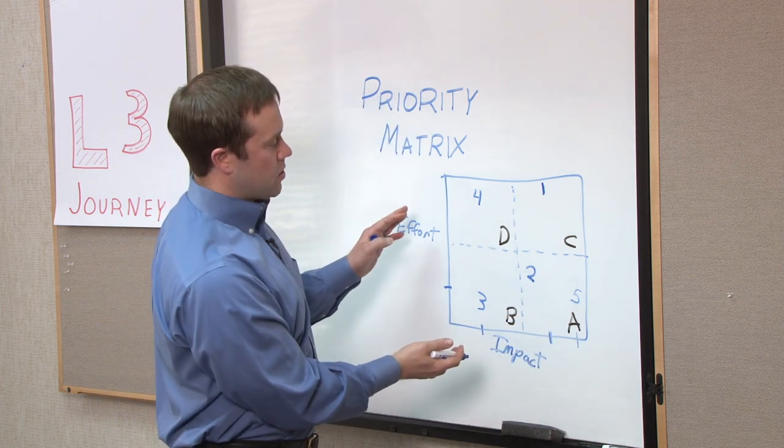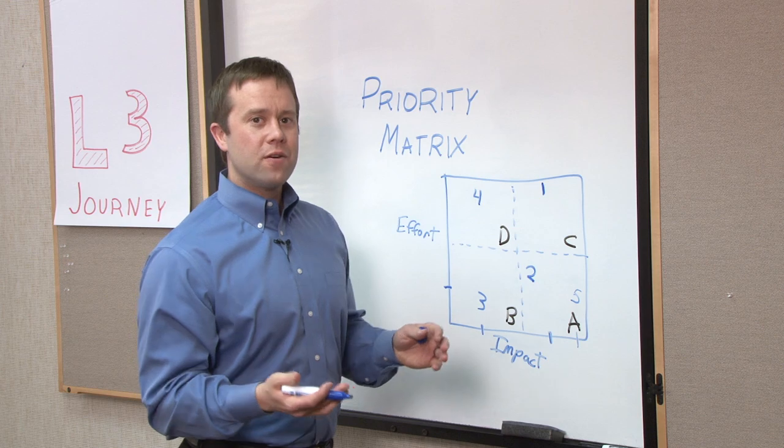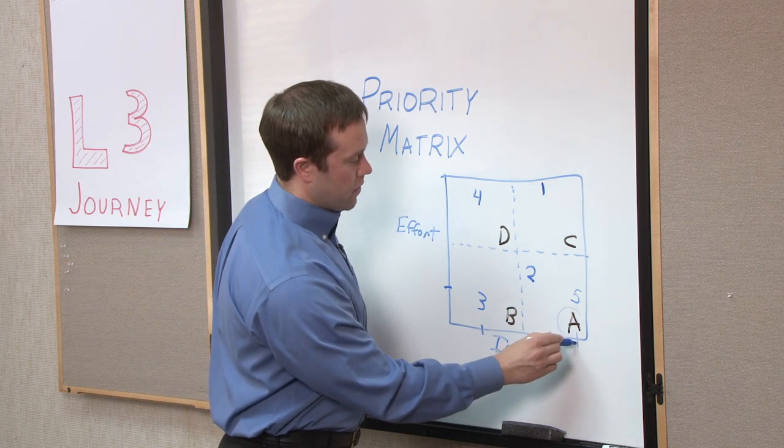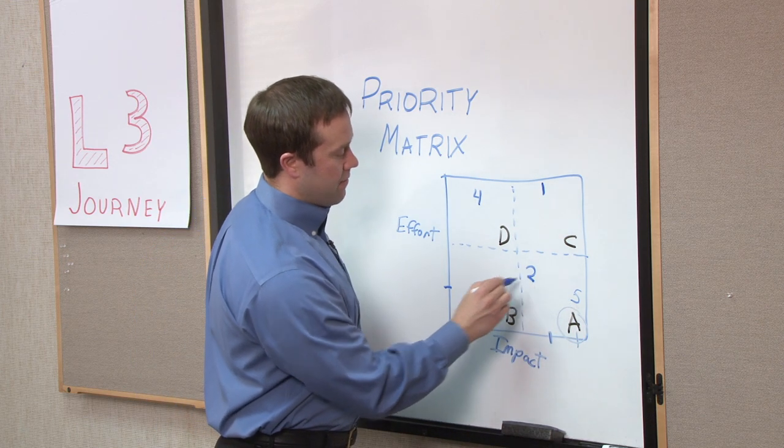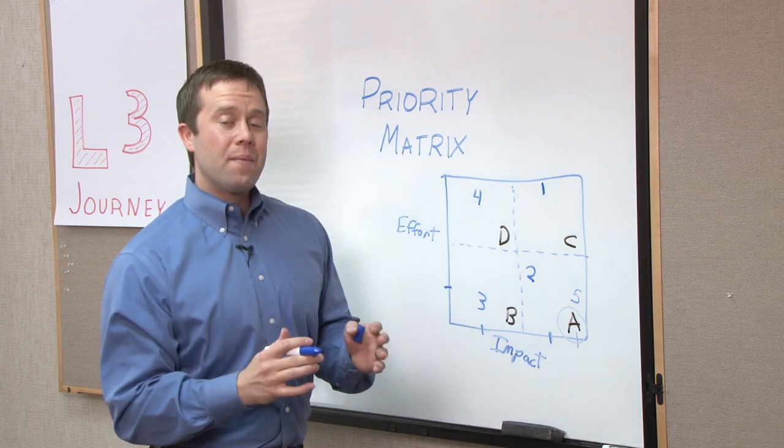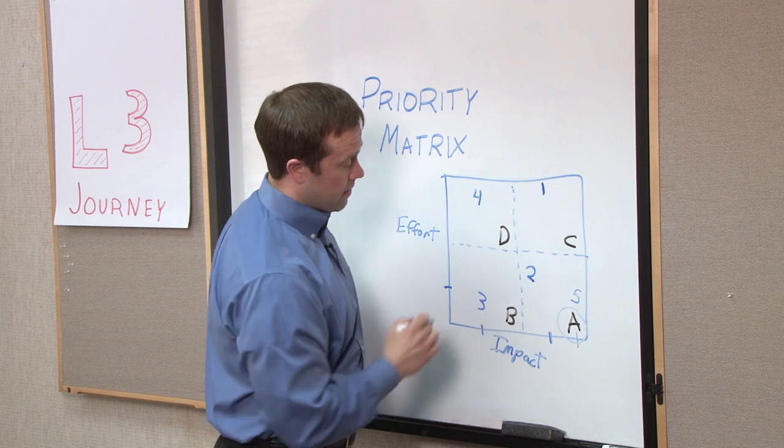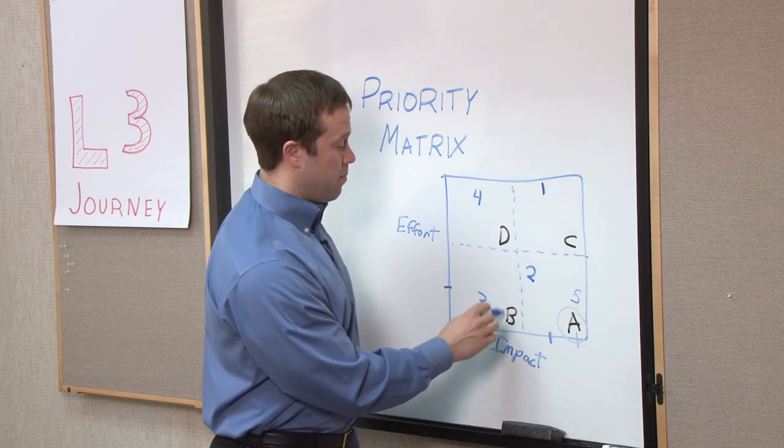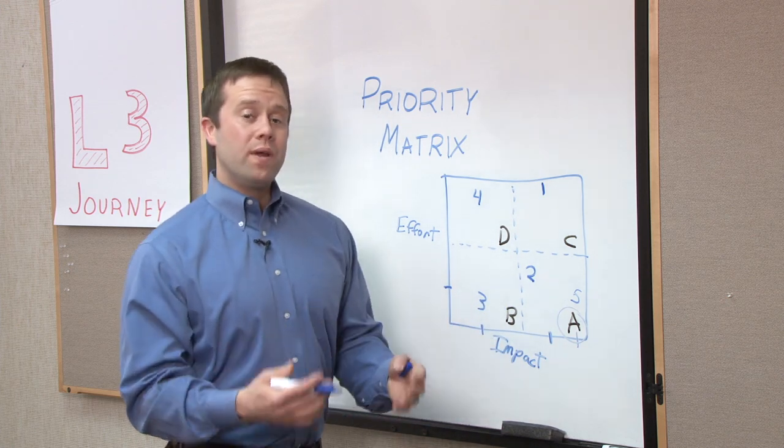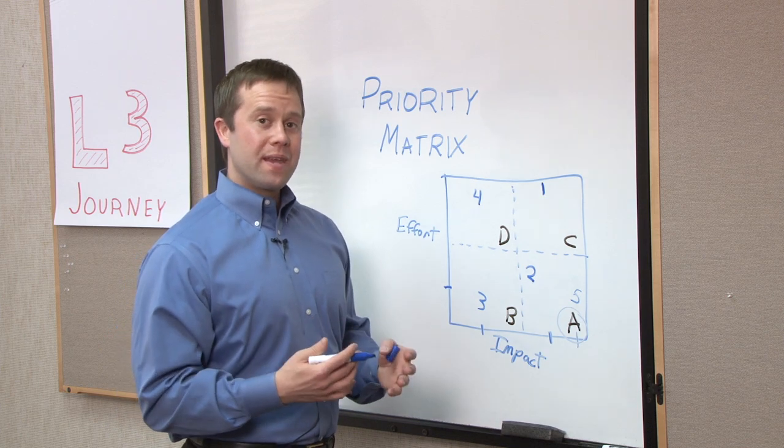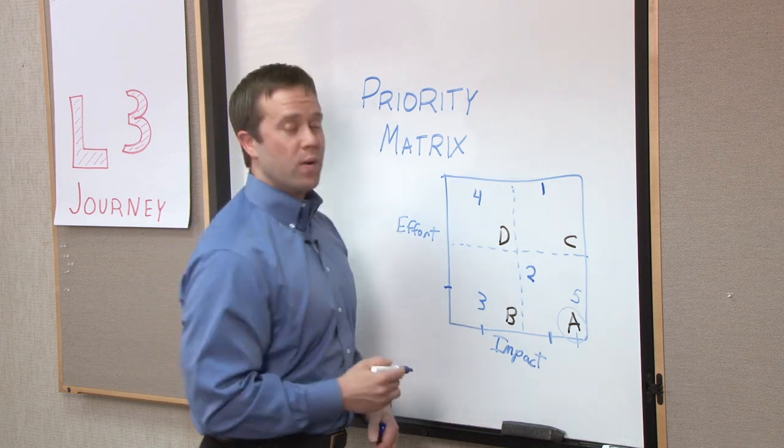How does this help us determine which improvement ideas to try first? Well, we want to try those in our A quadrant first. Ideas number five and number two, because we're going to get a great amount of impact for not too much effort. After that, we might consider doing improvement ideas in B. These can help us get some quick wins, build some momentum, demonstrate that we're really making changes, especially if they're things we can do quickly.